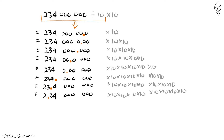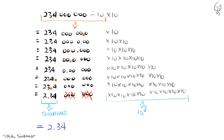Now let's simplify this. We said only the first three digits were significant, so we drop all the zeros. Also, 10 multiplied 8 times is the same as 10 to the 8th power. And there you have it, your first conversion.